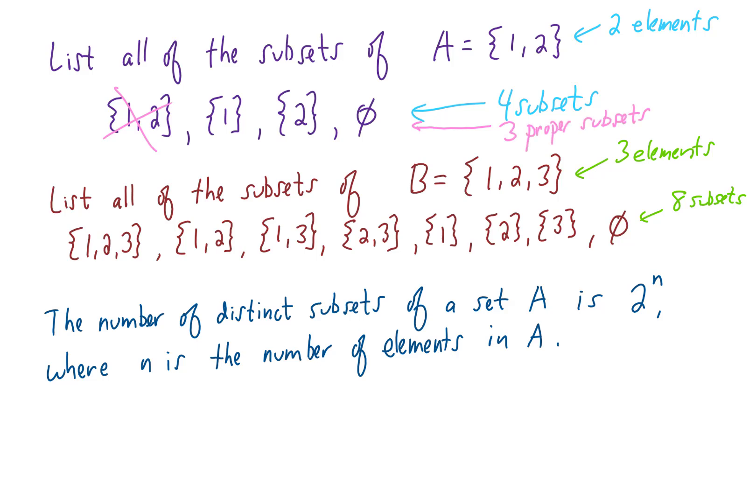We can make the same argument down here. If we're wondering how many proper subsets B has, we can look at our big list of subsets of B, and the only one that isn't a proper subset is, again, this one right here. So we'll take that off the list and we'll say that B has seven proper subsets. So one more formula for you. The number of distinct proper subsets of A is 2 to the N, but we're going to subtract 1.